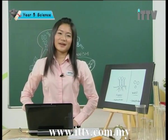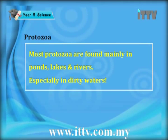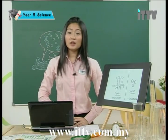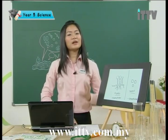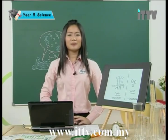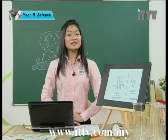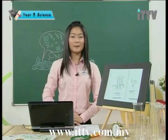Now let's move on to protozoa. Protozoa are usually found in ponds, lakes, and rivers, especially in dirty waters. Some protozoa feed on bacteria and play an important role in the environment — if there is nothing to feed on bacteria, then bacteria will multiply into very large amounts. So the existence of protozoa helps control the population of bacteria in the environment.